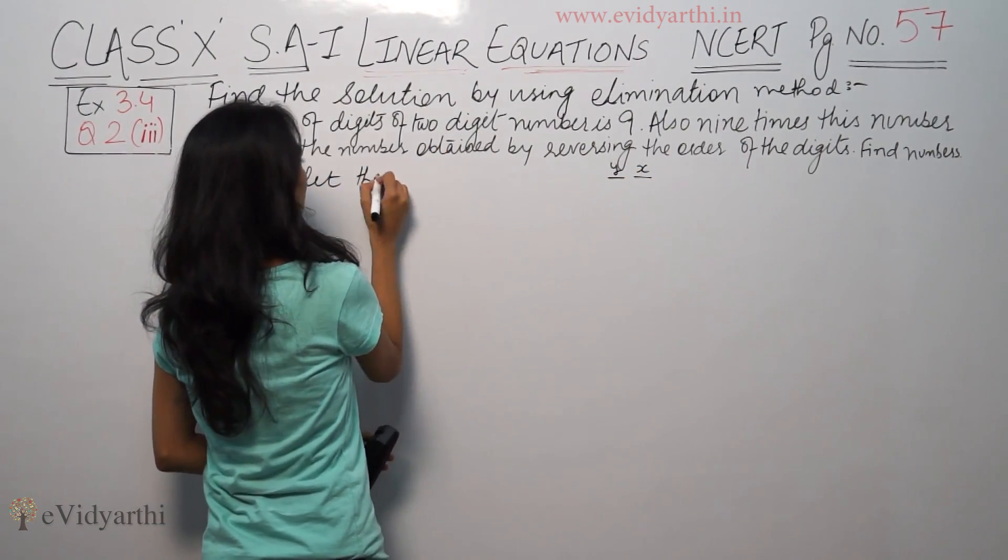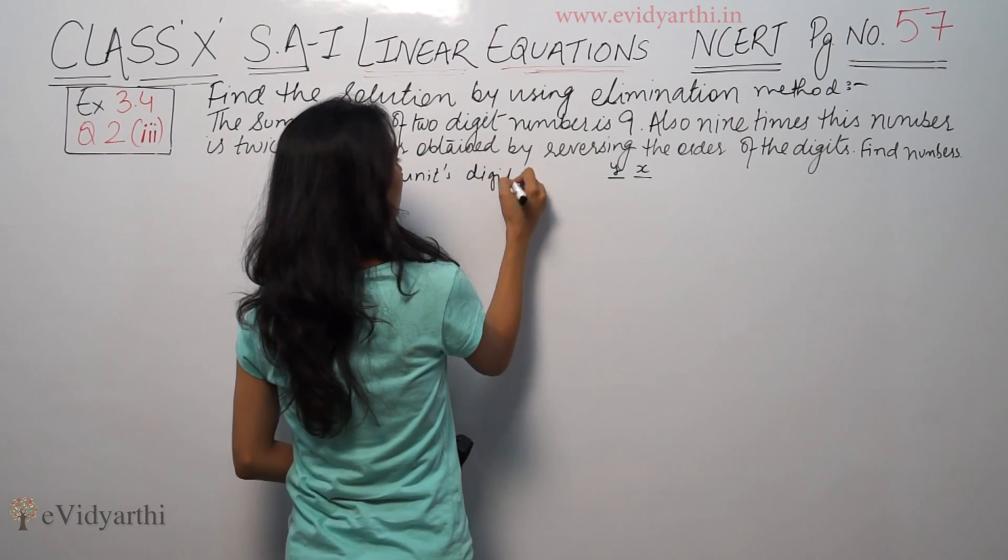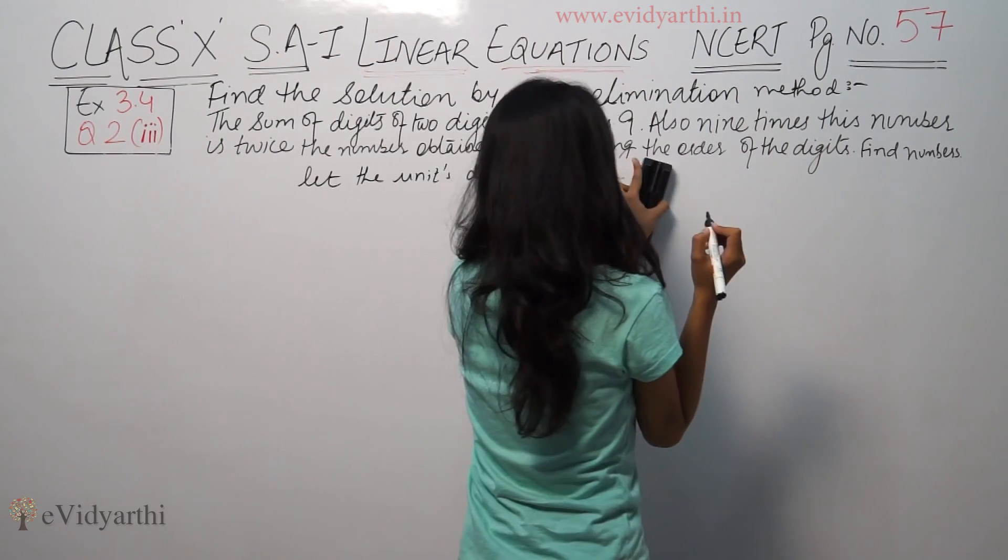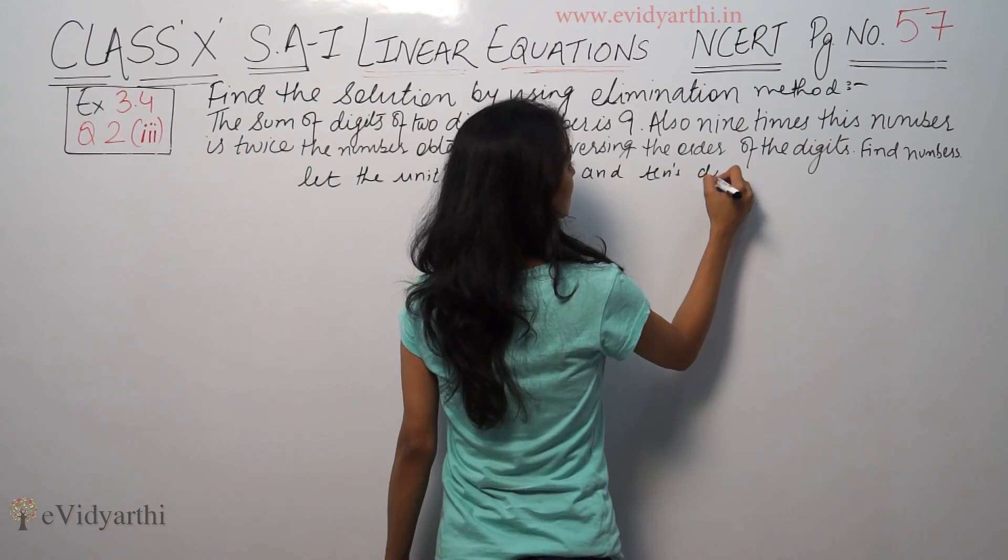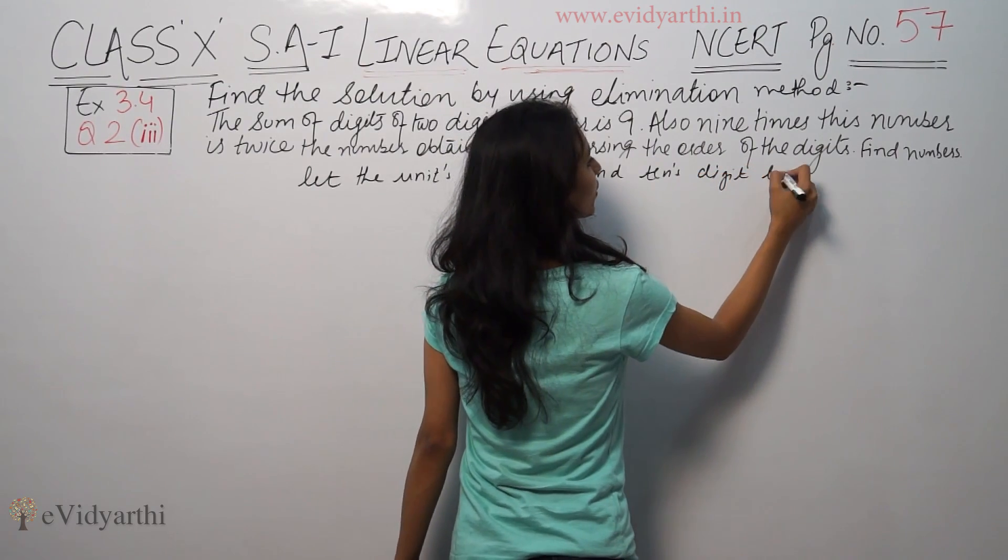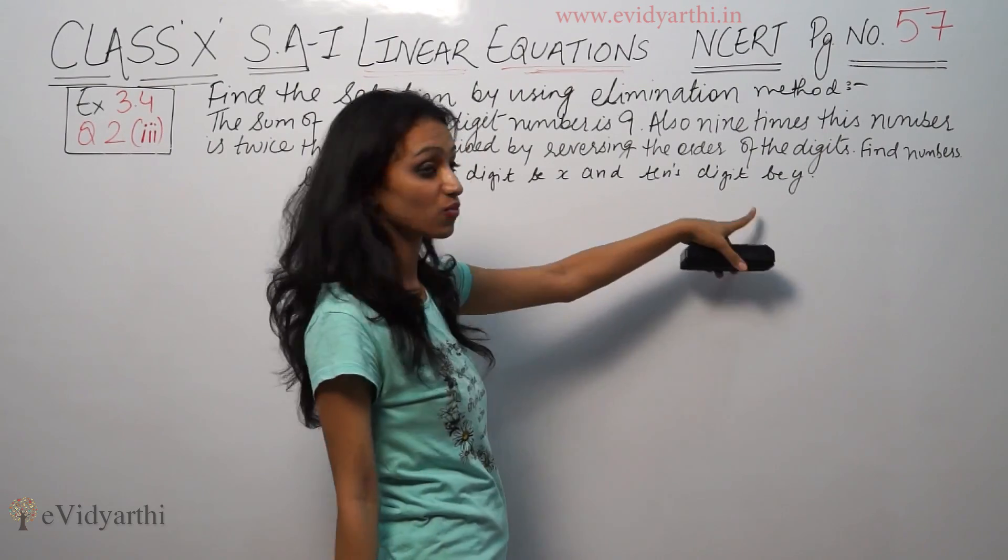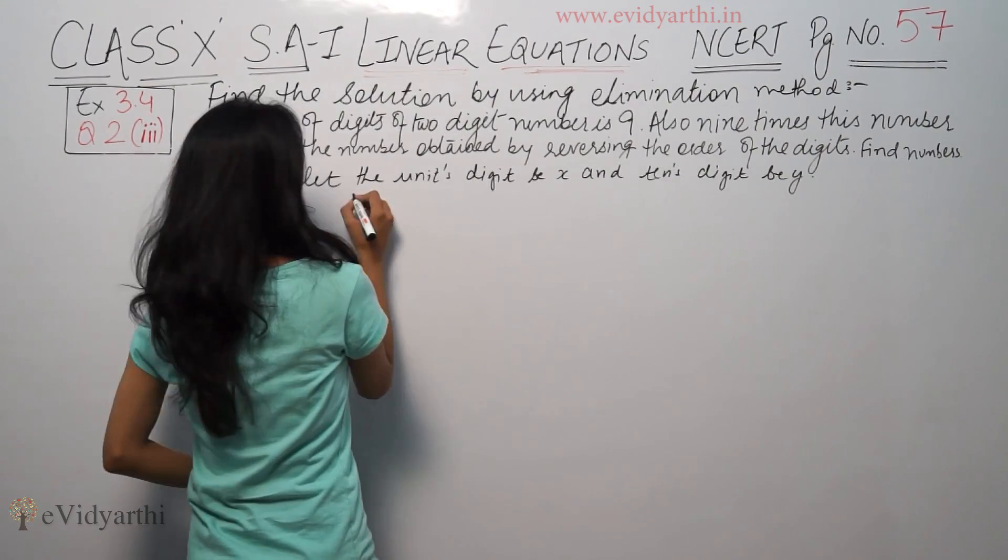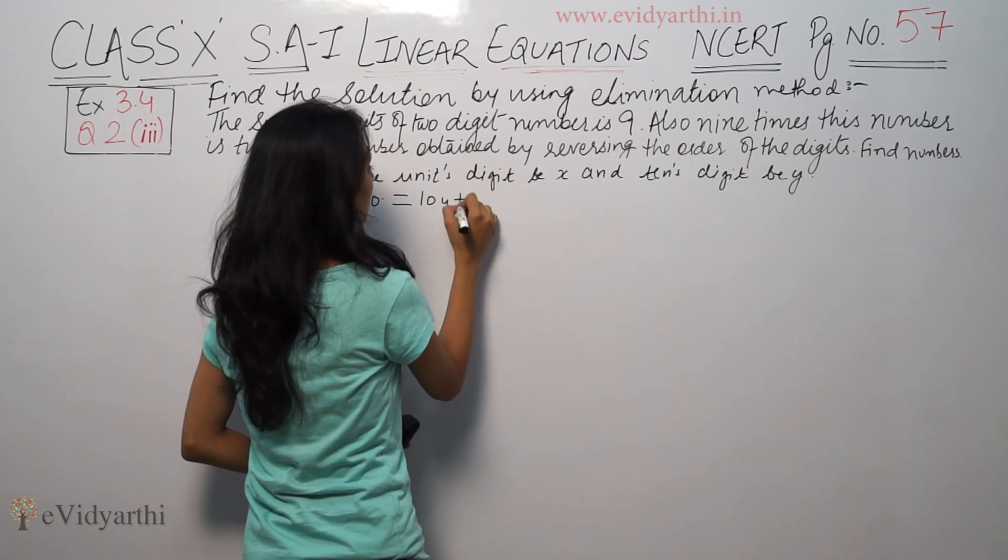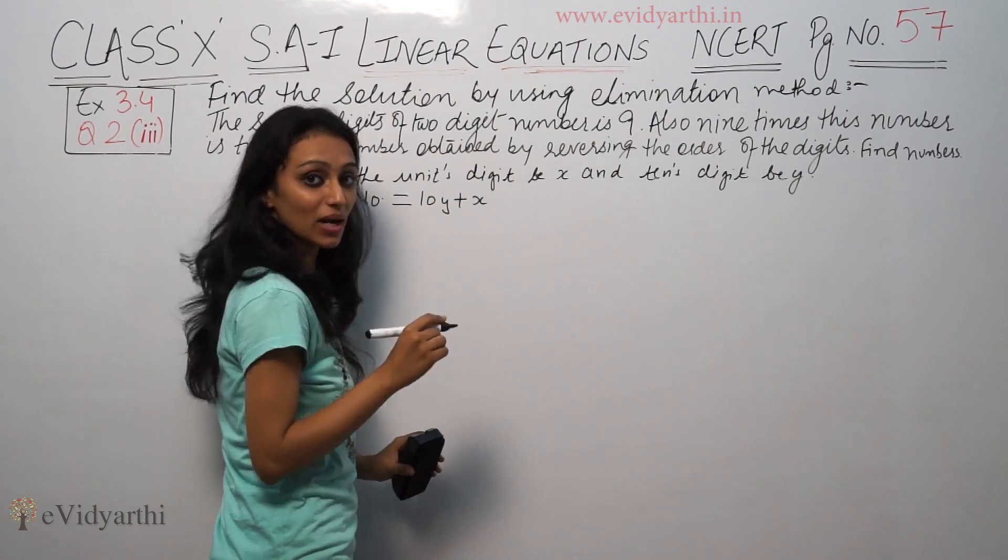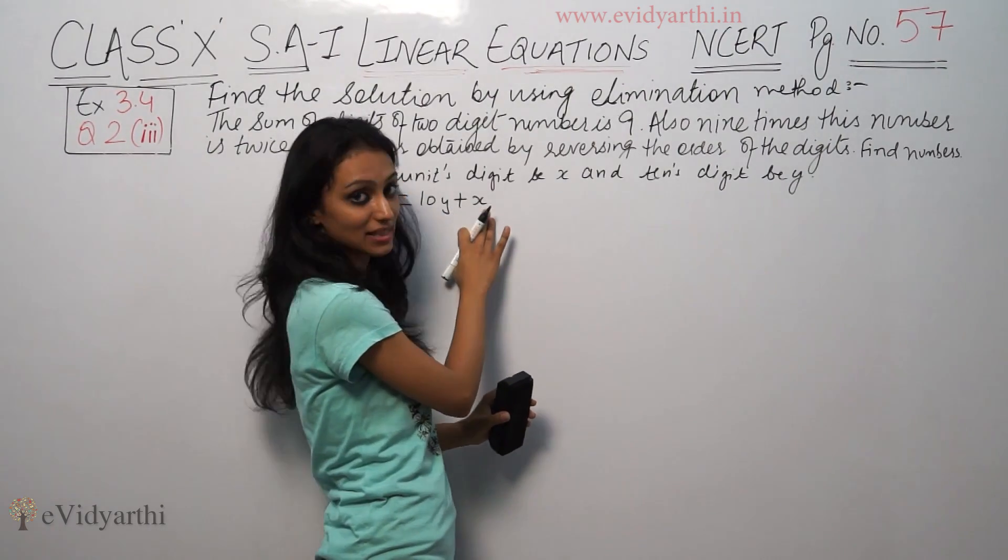Let the unit's digit be x and the tens digit be y, and our number is equal to 10y plus x. The number is 10y plus x because we have the tens digit y and units digit x.